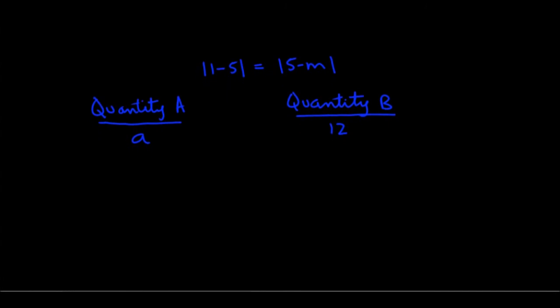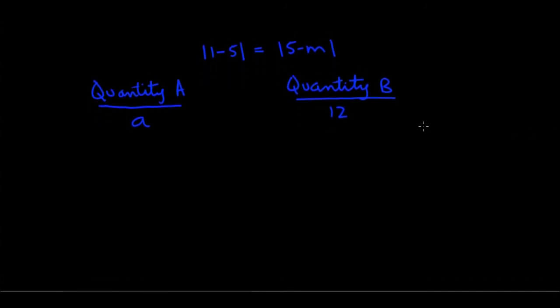So here is a problem that we can attempt. It's a quantitative comparison question. At the top we have this equality given: absolute value of 1 minus 5 is equal to absolute value of 5 minus M. And quantity A we have A, actually this M should be an A. Sorry for the typo.